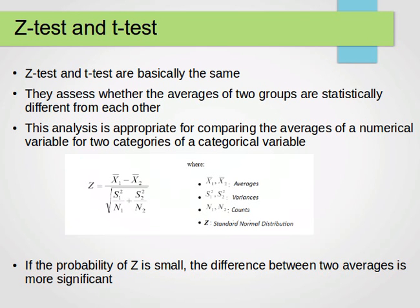The important part of this video is the z-test and t-test. Usually they are basically the same. What they do is assess whether the averages of two groups are statistically different from each other. This analysis is appropriate for comparing the averages of a numerical variable for two categories of a categorical variable.